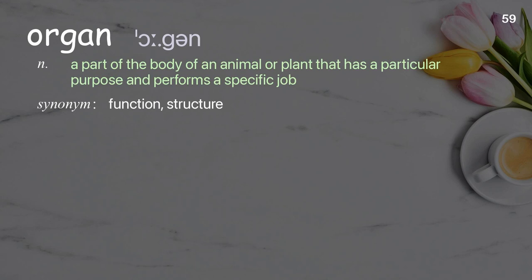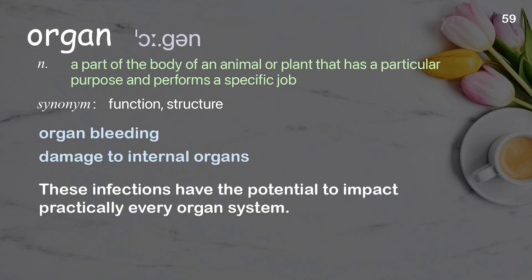Organ. A part of the body of an animal or plant that has a particular purpose and performs a specific job. Examples: organ bleeding, damage to internal organs. These infections have the potential to impact practically every organ system.